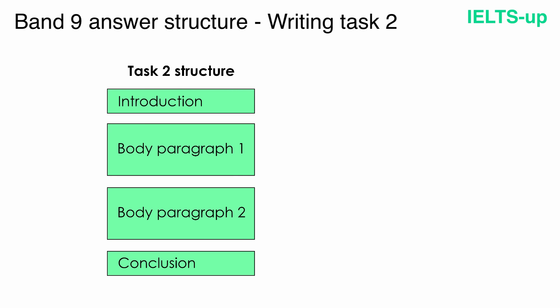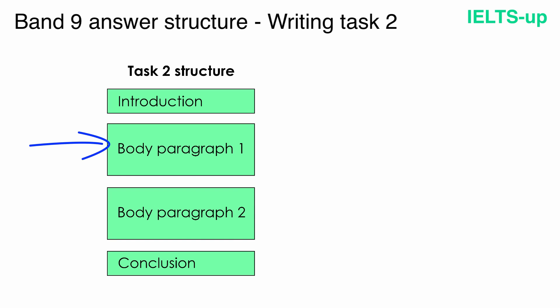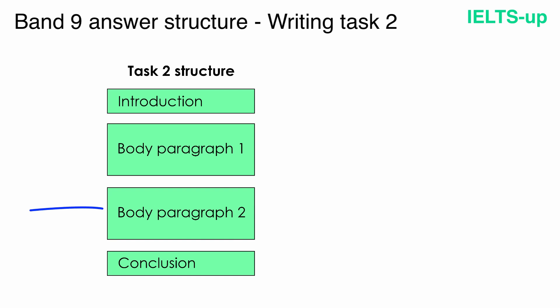Here is a Band 9 answer structure for IELTS Writing Task 2. Our first paragraph is an introduction. In the introduction, you paraphrase the statement and present your opinion. After that comes Band 9 paragraph 1. In this paragraph, you put the first reason, or so-called supporting point, of your opinion.